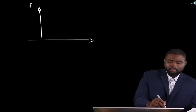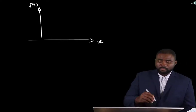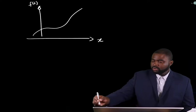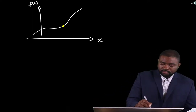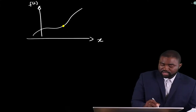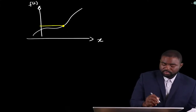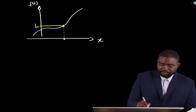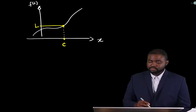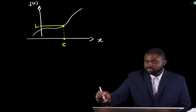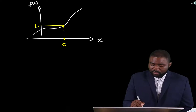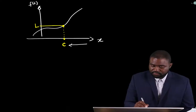Let's say we have a function f of x. This is x — it could be any function. And we have a point here. The value at this point is l, and the value of x at this point is c.